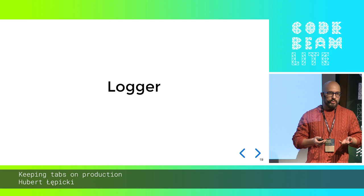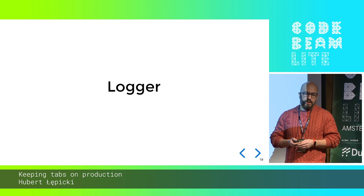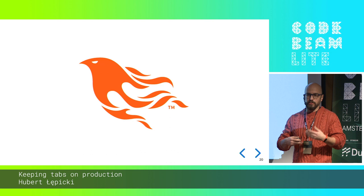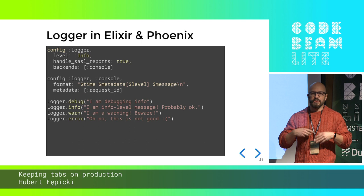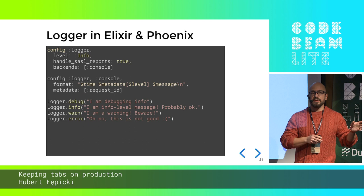In Elixir, the module responsible for keeping track of logs is called Logger — not very creative, but that's the way it is. If you're using Phoenix, it's already preconfigured by Phoenix when you generated the application to do certain things, behaving differently in production than in development. It's a sensible startup configuration for your Phoenix application. In our config we have a configuration for the logger, and it will handle Erlang errors as well — whenever a supervisor or GenServer crashes on the Erlang side, it'll be fed back to the Elixir logger.